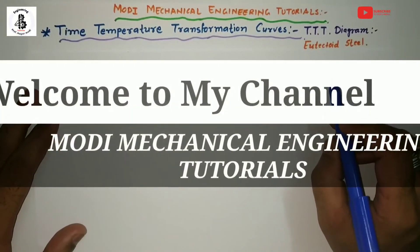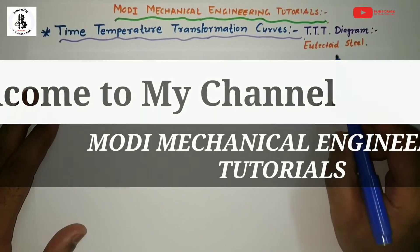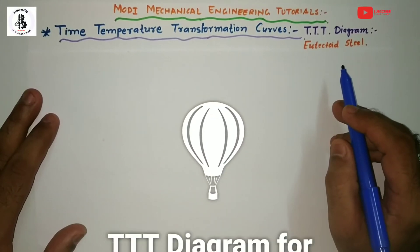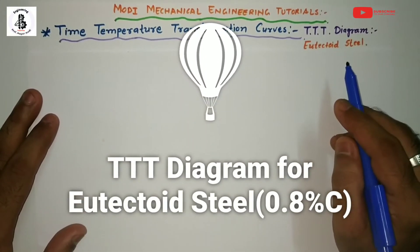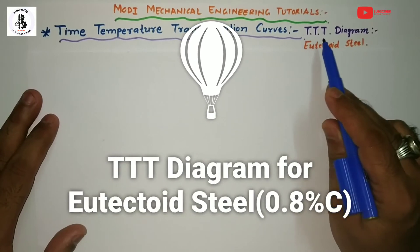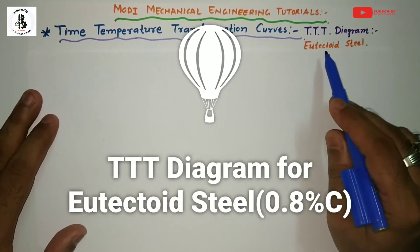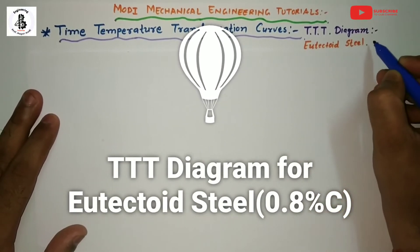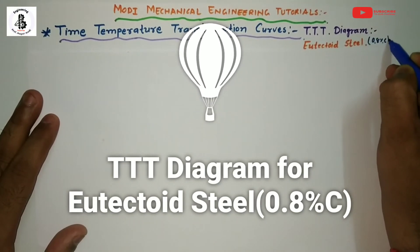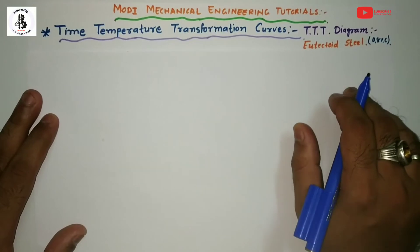Welcome to my YouTube channel Modi Mechanical Engineering Tutorials. In this video I would like to explain about the time temperature transformation curve, or TTT diagram, for eutectoid steel — which has 0.8 percent carbon present in the steel.